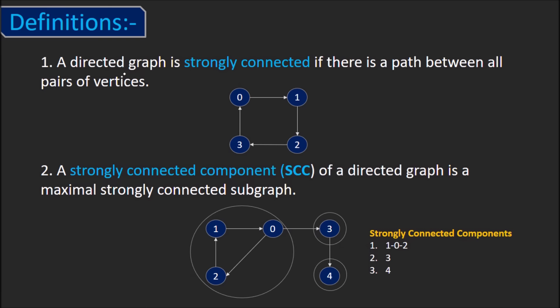First, a directed graph is strongly connected if there is a path between all pairs of vertices. Consider the graph shown here. We can go from 0 to 1, 2, or even 3. In fact, if we pick any two vertices, there will be a path between them. For example, we can go from 1 to 3 through vertex 2 or go from 3 to 1 via vertex 0. So, this graph is strongly connected.